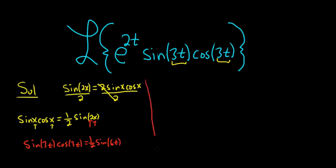Let's go back to our Laplace now. So now we can rewrite this as the Laplace transform. We still have that e there, so e to the 2t. And then all of this is times 1 half sine 6t.